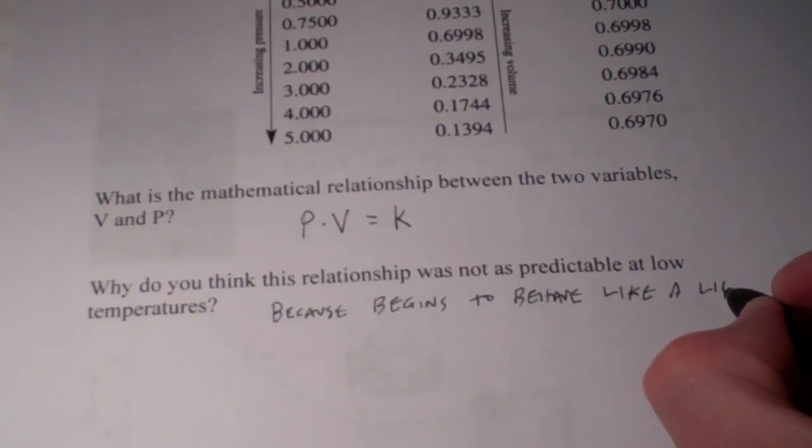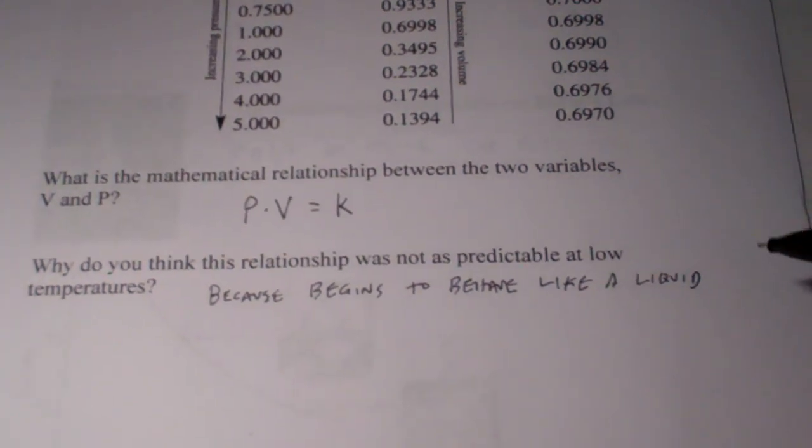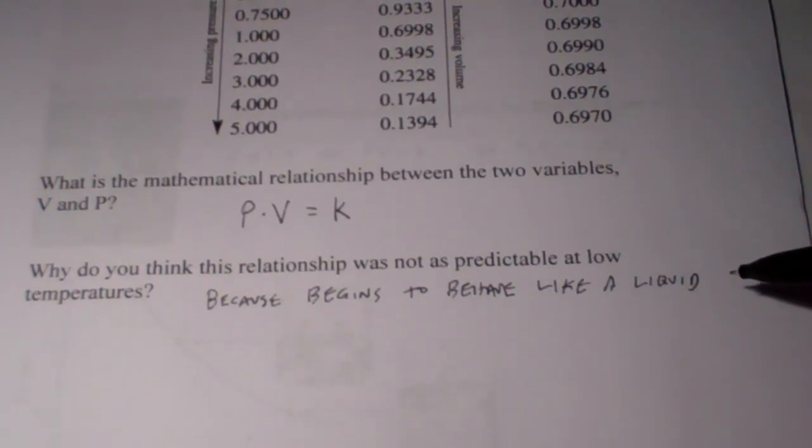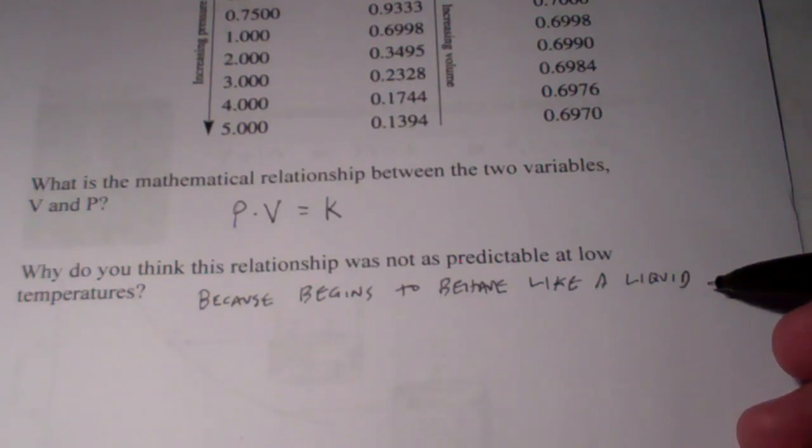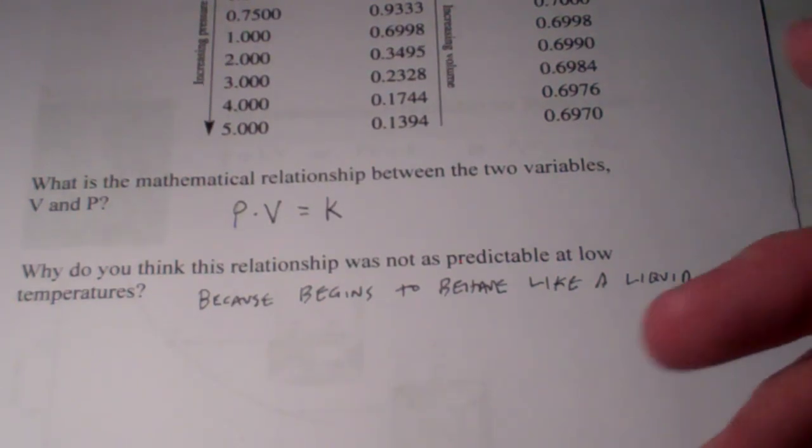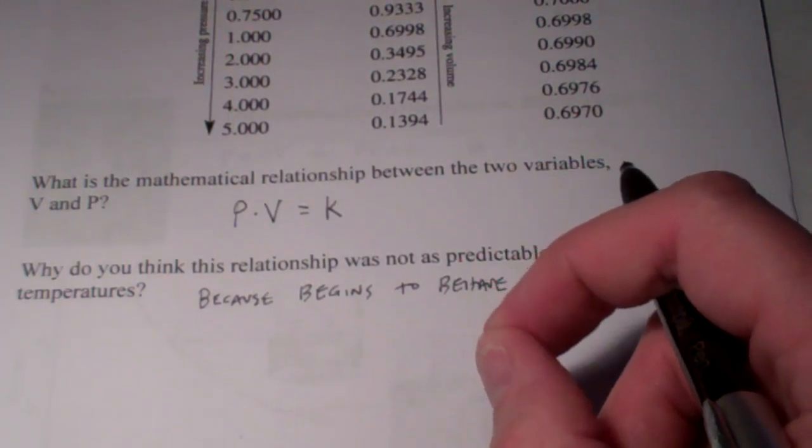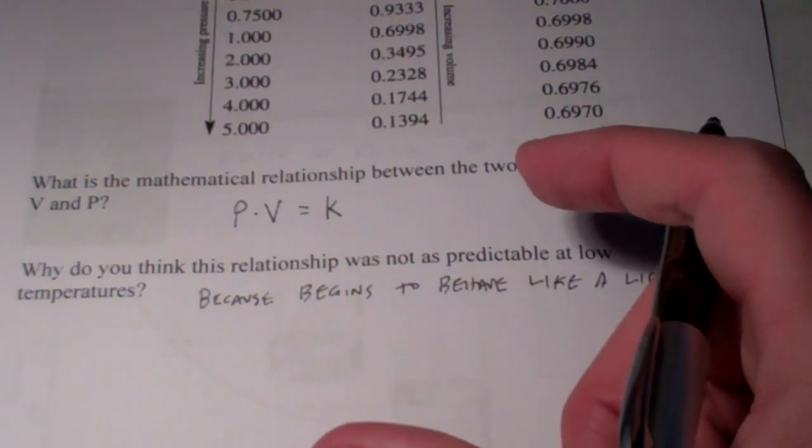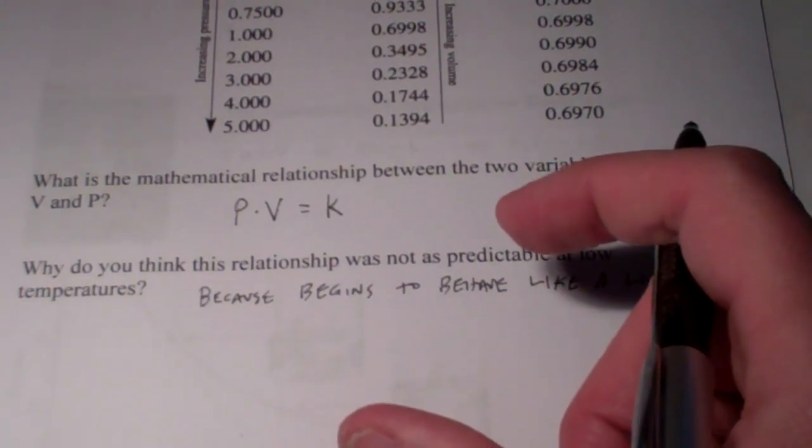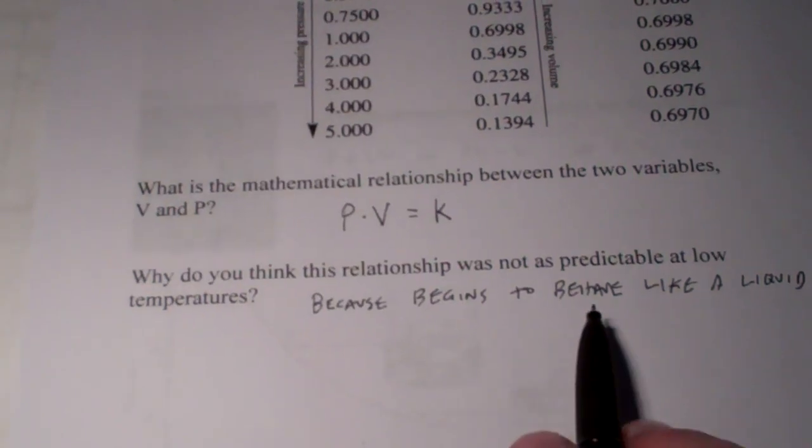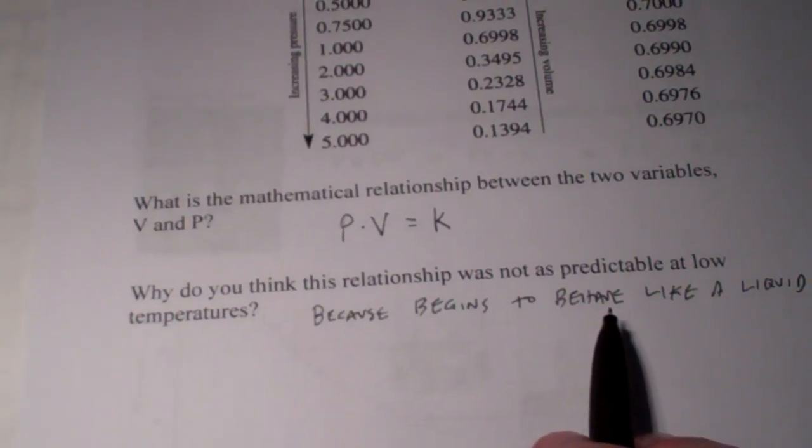So, the relationship falls apart at high pressures and low temperatures because the gas begins to behave like a liquid. In fact, if we get the temperatures low enough or the pressures high enough or a combination of both, the gas actually condenses into a liquid. Remember, liquid particles have attractive forces. Gas particles, according to the kinetic theory, do not. So, this relationship begins to fall apart under those situations.